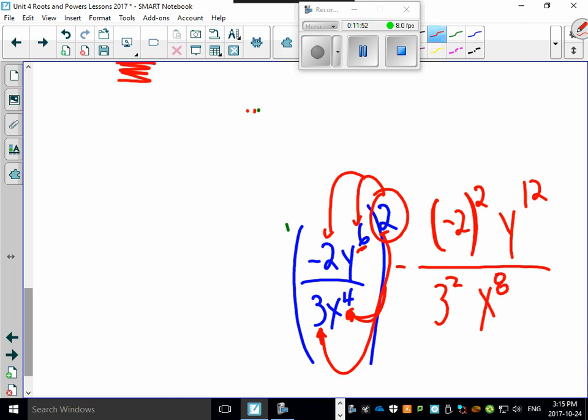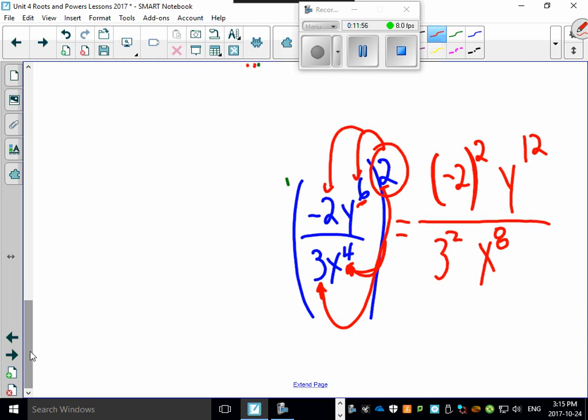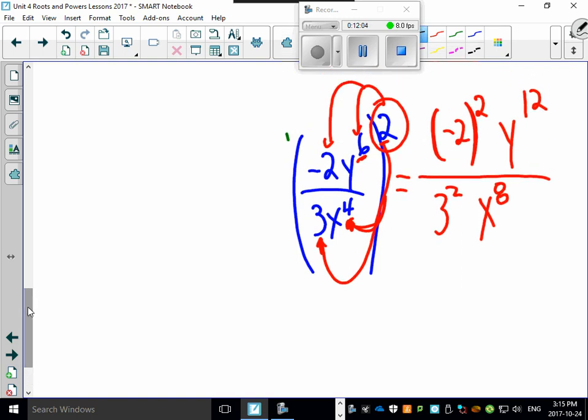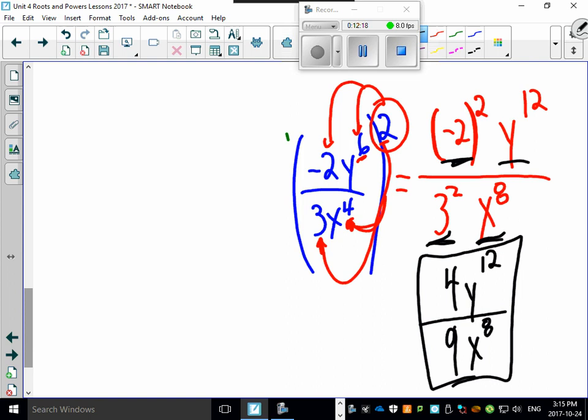Almost done. I think this might be the longest podcast that we have on record here. Let's clean it up, let's finish it. Minus 2 squared is 4, Y to the 12th - there it is. 3 squared is 9, X to the 8th. And I think it's finally done.